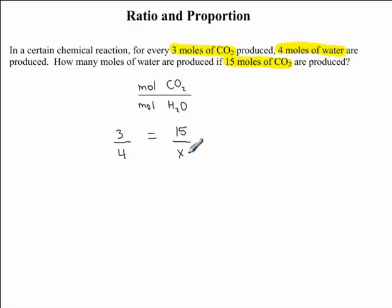Now, in order to solve for X, we need to cross multiply, which means we're going to bring this X up and multiply it by the 3, and we're also going to bring this 4 up and multiply it by the 15. So we'll still have this equal sign.